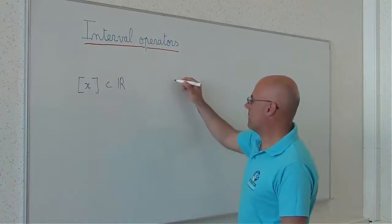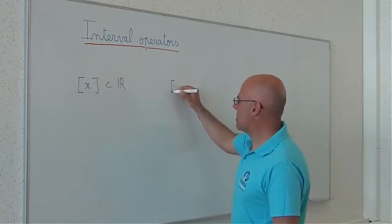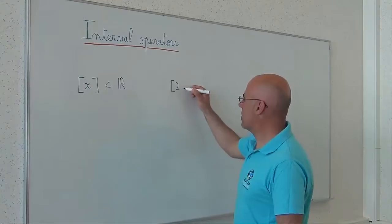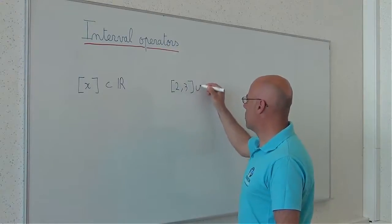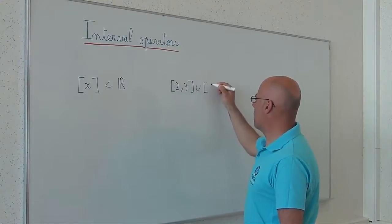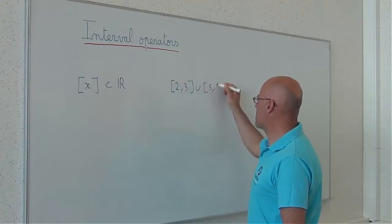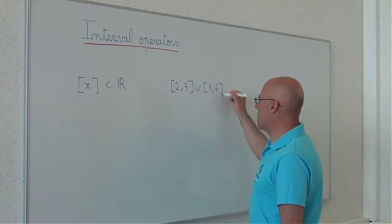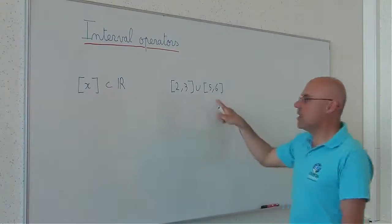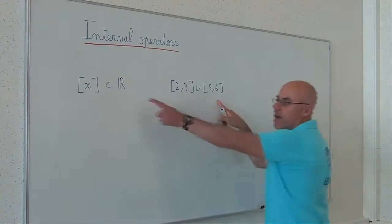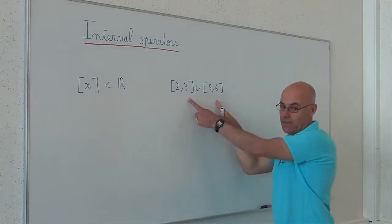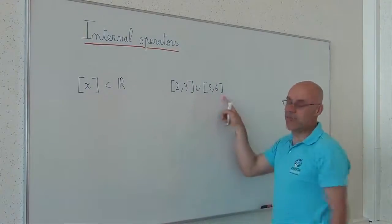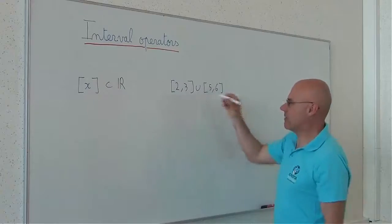So connected — what does that mean? It means, for instance, that (2,3) ∪ (5,6) is a subset of R, but it is not connected. So it is not an interval.